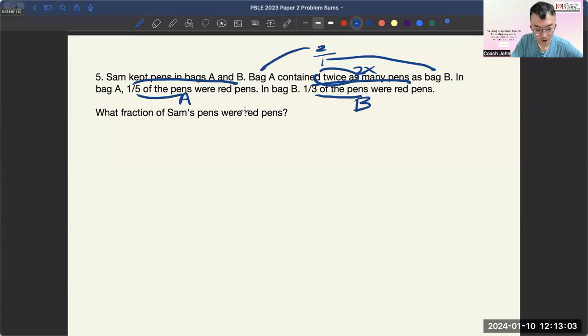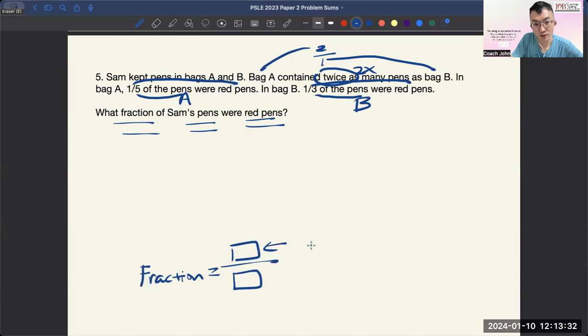Alright, what fractions of Sam's pens were red pens? So to find the answer, your answer will be as a fraction. So let's write here, fraction. I'll try to do something that's a bit different so that children who find these kinds of questions challenging, they have more clarity. This one will be what we call part, and this one is what we call whole.